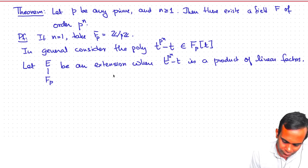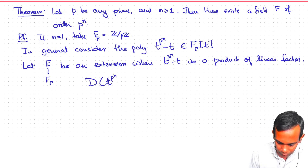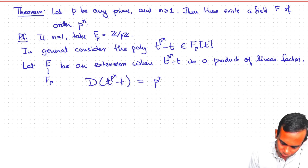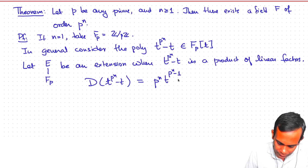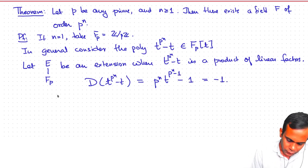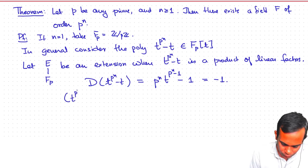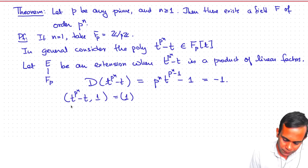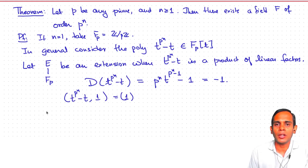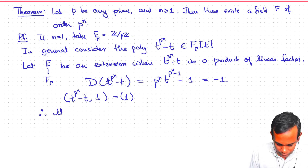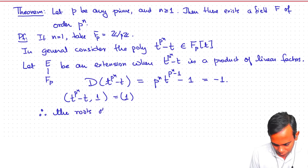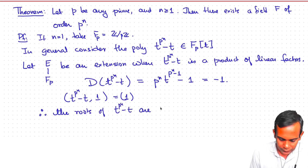Note that if we take the derivative of t^(p^n) − t, that turns out to be p^n · t^(p^n − 1) − 1, which is actually just −1. So the gcd of t^(p^n) − t and 1 is 1. By the derivative criterion for a polynomial having distinct roots, the roots of t^(p^n) − t are p^n distinct elements of E.